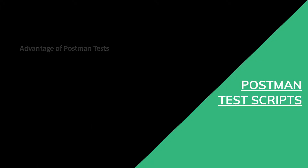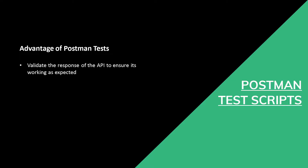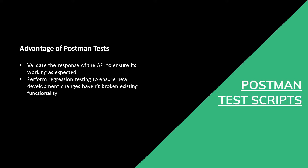So let's talk about the advantages of using Postman test. With Postman test, you can validate the response of the API to ensure it's working as expected. So far we have just been making API requests using Postman, but how do we know that the data being returned is what we want? Using tests, we can verify the response and the functionalities of our API. We can also perform regression testing to ensure that new development changes haven't broken our existing functionality. One of the main purposes of writing these tests is to make sure if something breaks, we can catch it right away through the automation we have built, without having to do anything manually.